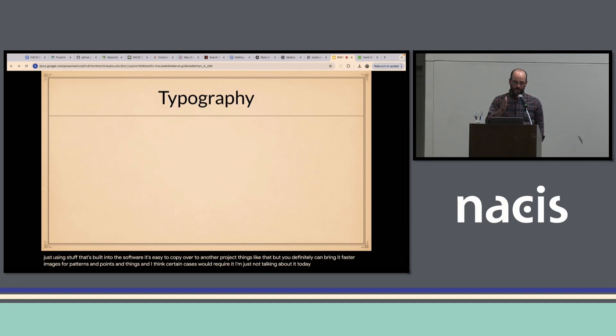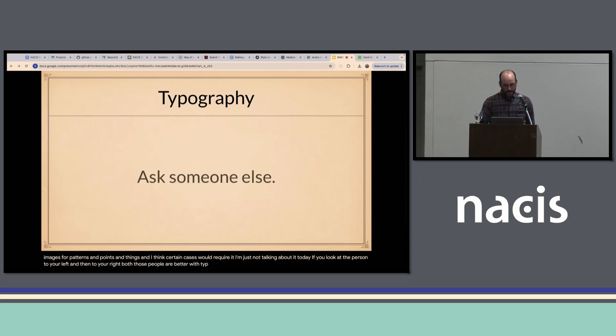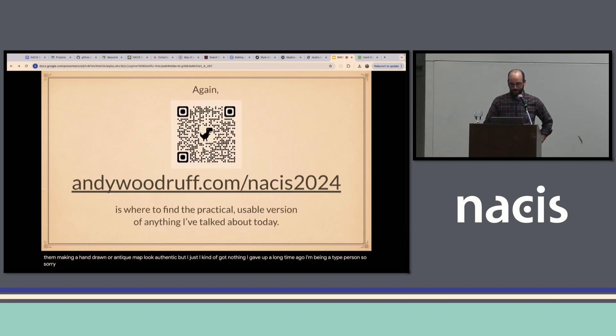With typography, if you look at the person to your left and then to your right, both those people are better with typography than me, so I do want to acknowledge it's a huge part of making a hand-drawn or antique map look authentic. But I just, I kind of got nothing. I gave up a long time ago on being a type person, so sorry.